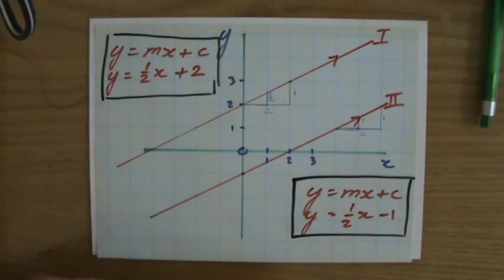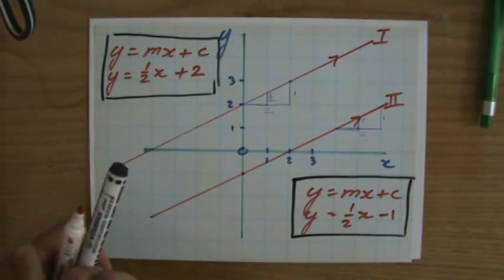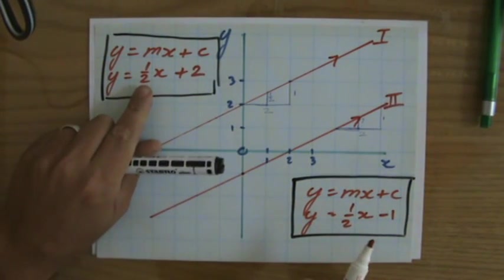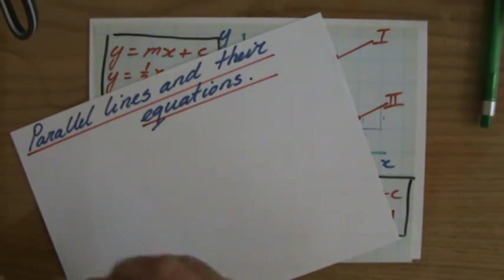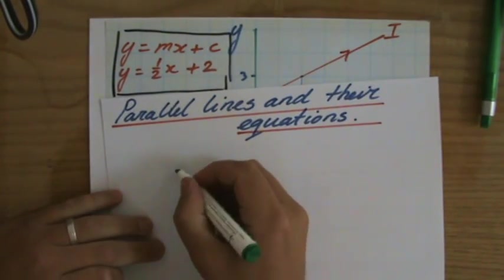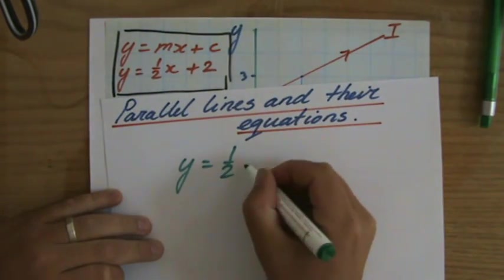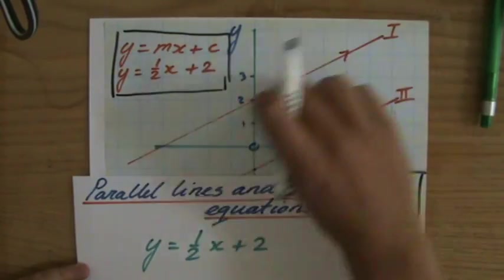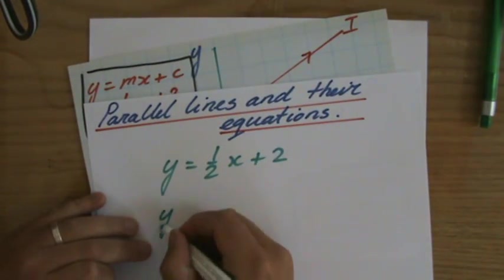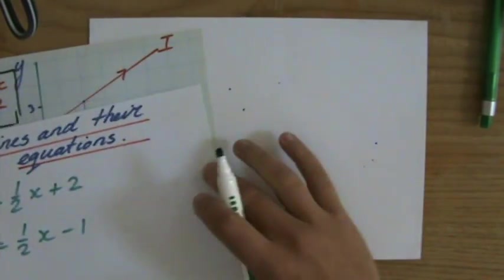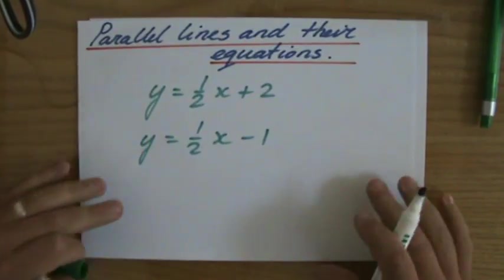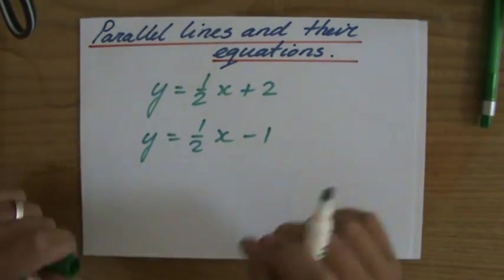And we need to be able to construct equations looking at lines. Now, if I compare this equation, y equals a half x plus two. Let me write that down on a new piece of paper. I'm getting a new marker. Hopefully this one works better. Y equals a half x plus two. That's the equation of line one. And line two, we've said y equals a half x minus one. The y-intercept was at minus one.